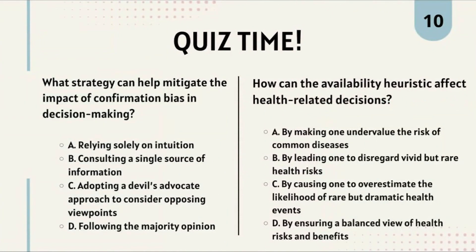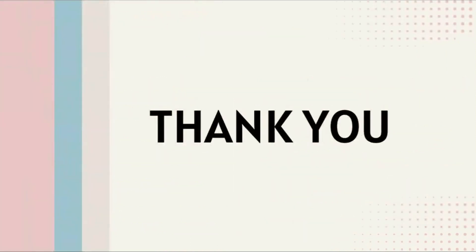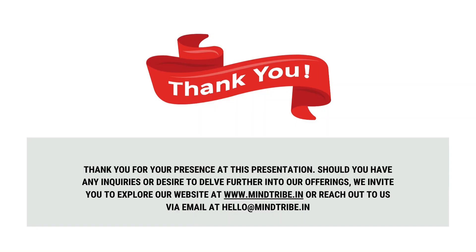Question 4: How can the availability heuristic affect health-related decisions? Option A: by making one undervalue the risk of common diseases. Option B: by leading one to disregard vivid but rare health risks. Option C: by causing one to overestimate the likelihood of rare but dramatic health events. Option D: by ensuring a balanced viewpoint of health risks and benefits. The correct answer is Option C. Thank you everyone for your attention!